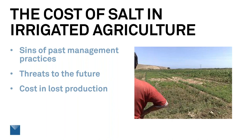I visited the city of Yinchuan in the north of China in the early 1980s. Yinchuan is on the Yellow River, where irrigated agriculture has been practiced for thousands of years. This was just before Christmas, and I saw a lot of white there, but it wasn't snow. Everything was covered with salt.